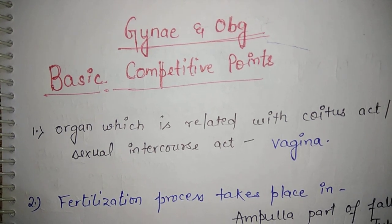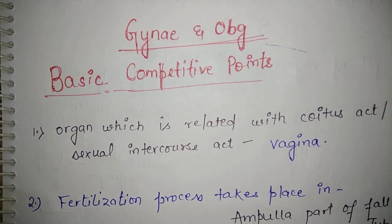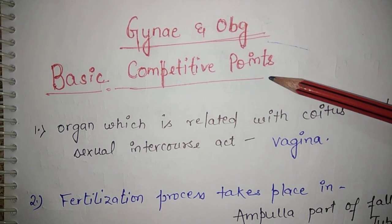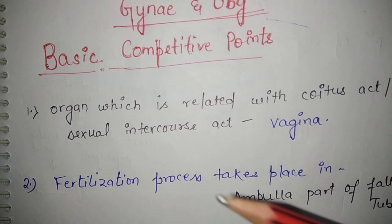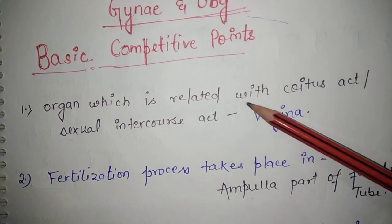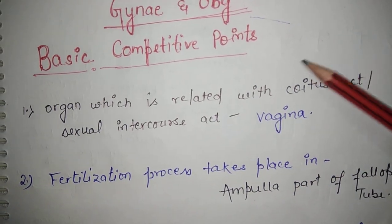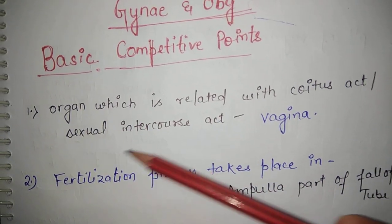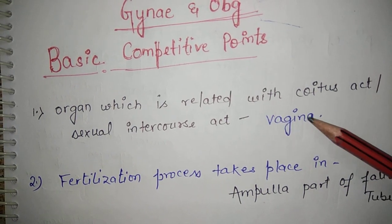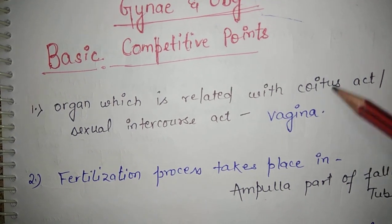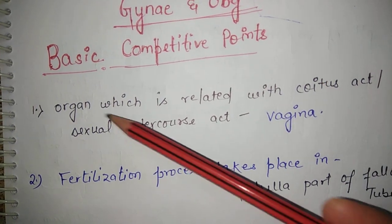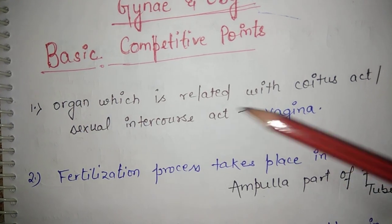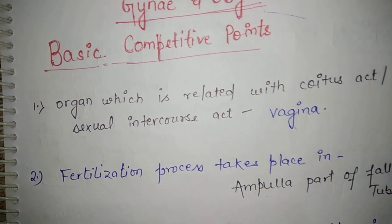Hello everyone, today we will discuss gynae and OBG basic competitive points. The first point is, the organ related with coitus act or sexual intercourse is vagina. Where coitus or sexual intercourse activity is taking place, the organ is vagina.